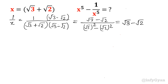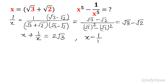So x is equal to root 3 plus root 2, and 1 over x is root 3 minus root 2. Let us add both equations: x plus 1 over x equals root 3 plus root 2 plus root 3 minus root 2, so it will be 2 root 3. And if we subtract: x minus 1 over x equals root 3 plus root 2 minus root 3 plus root 2, so it will be 2 root 2.